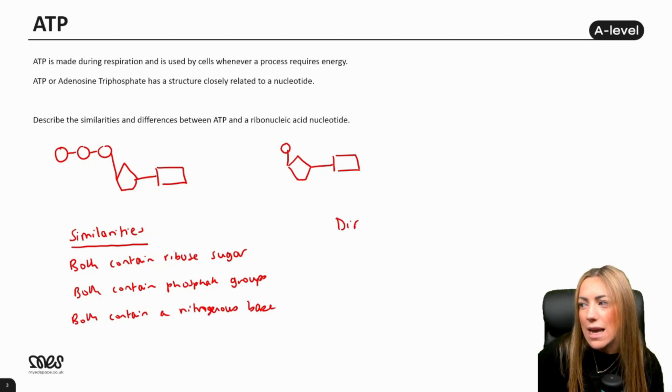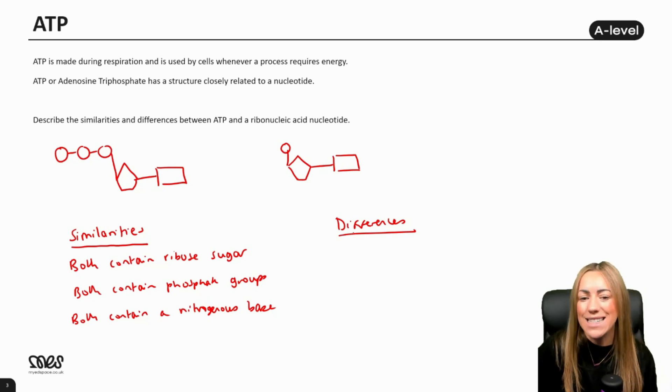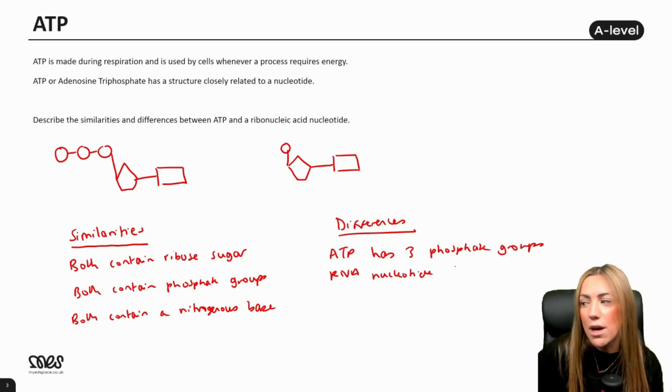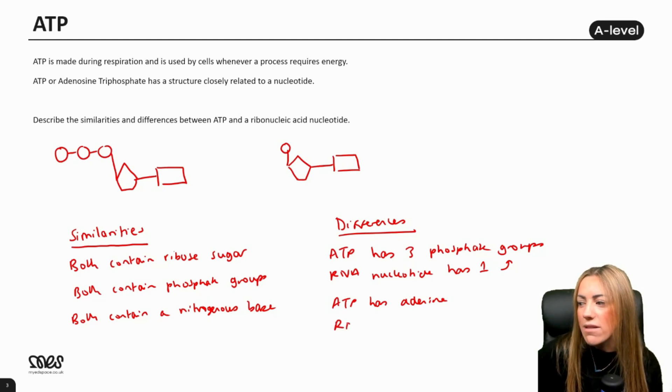But we have to be clear on the differences. ATP has three phosphate groups and an RNA nucleotide, which is the monomer of RNA, has just one phosphate group. And then the other difference, ATP has adenine, so the base is always adenine, whereas RNA can have adenine, uracil, cytosine, or guanine.